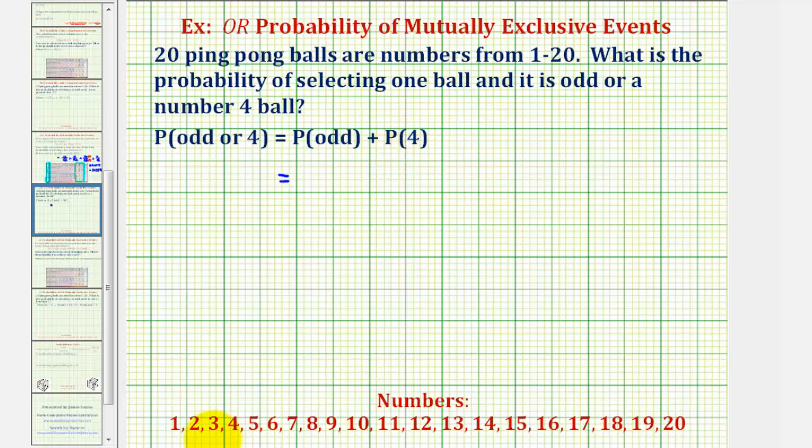Looking at the numbers from one to twenty, half of these will be odd, or the numbers one, three, five, seven, nine, and so on. So ten of the twenty numbers are odd.